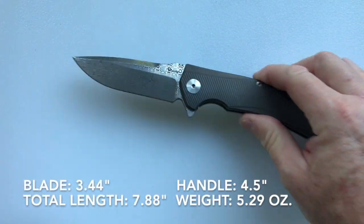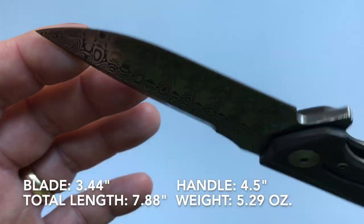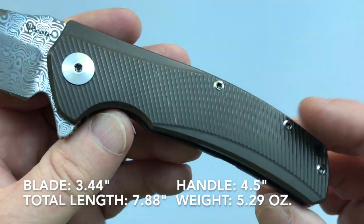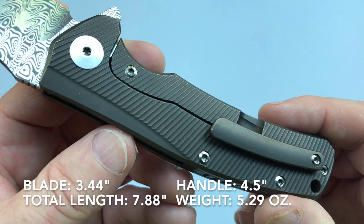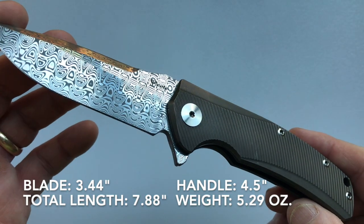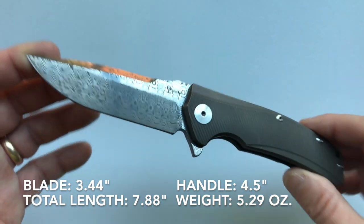The specifications are a blade length of 3.44 inches, a handle length of 4.5 inches, giving a total knife length of 7.88 inches. The weight of the knife is 5.29 ounces.